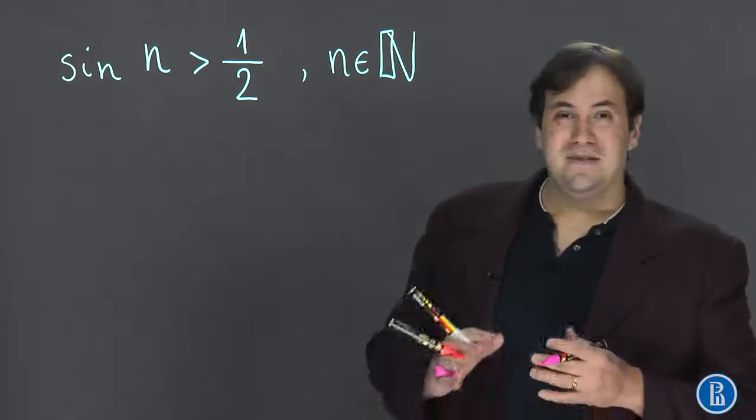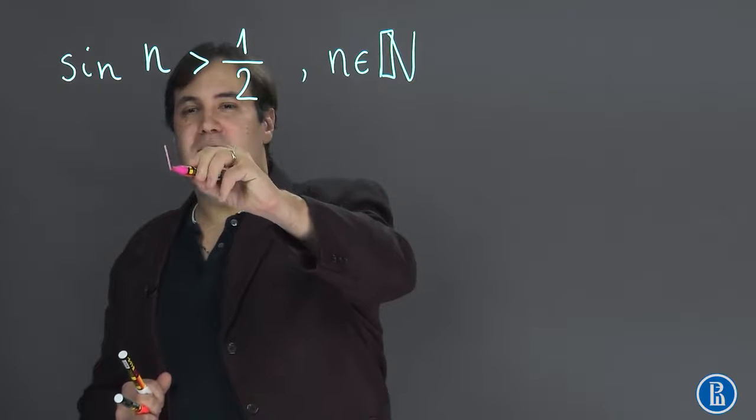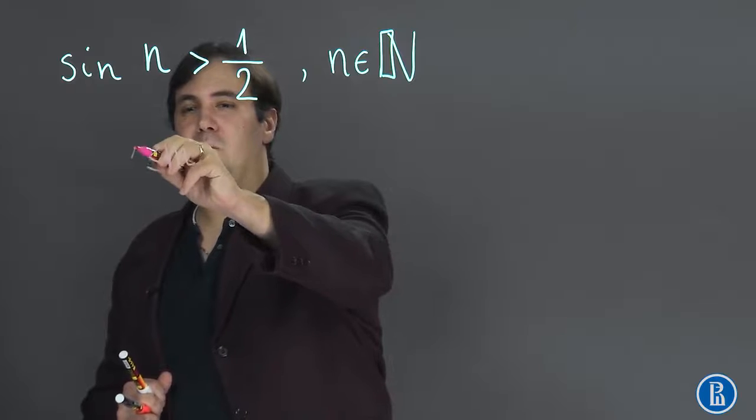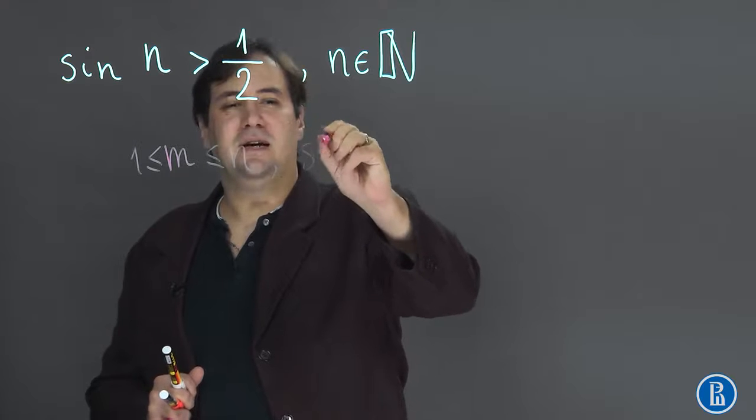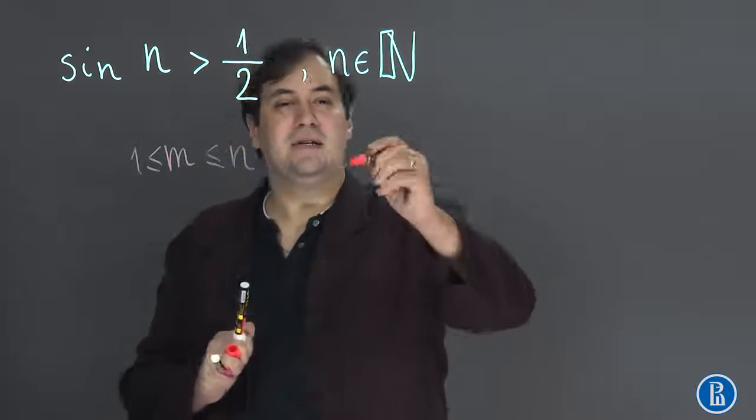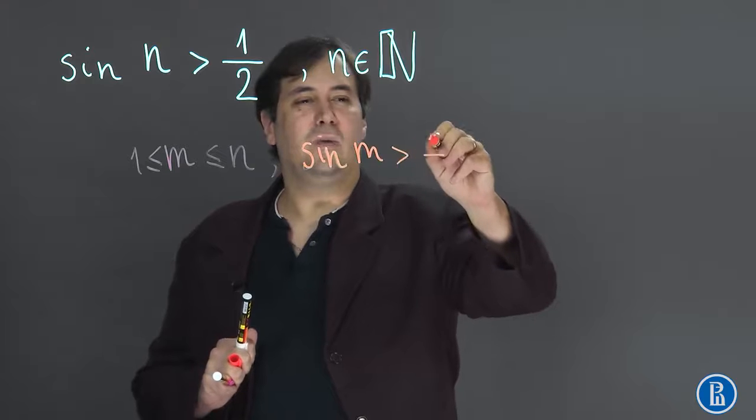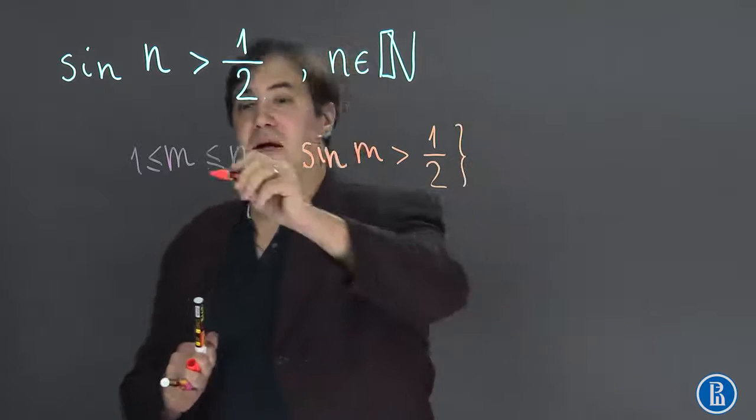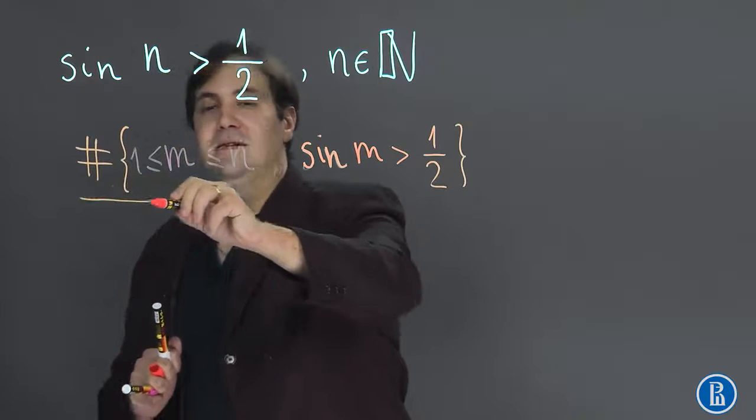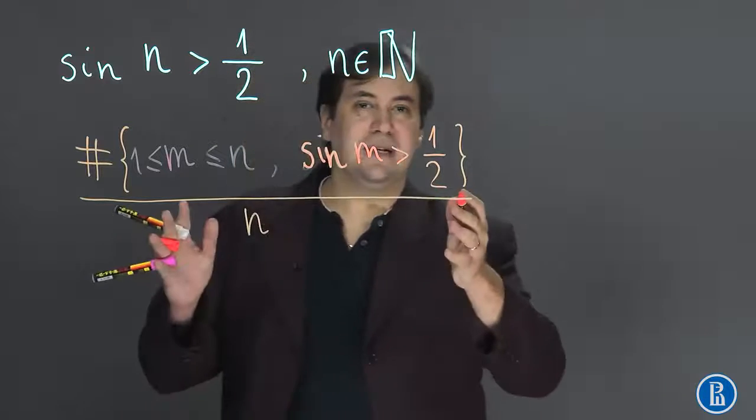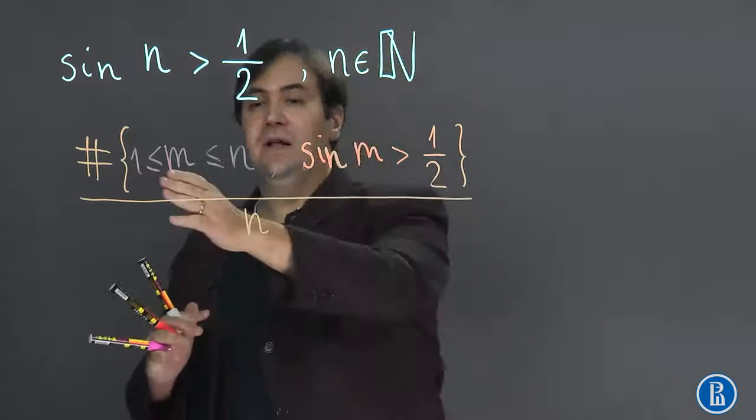So now let's define the frequency. First we need to find all m from 1 to n such that sine of m is greater than one half. Then we count the number of such m and then divide it by n.